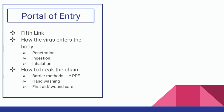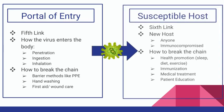Without them, the chain continues to the susceptible host, the sixth link. This is essentially the new host, which can be anyone, especially those who are immunocompromised. To break the chain, it is best to boost your immune system through health promotion, which includes getting enough sleep, diet, and exercise, getting immunizations, medical treatment, or patient education.